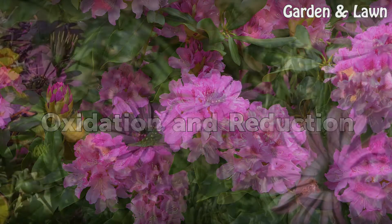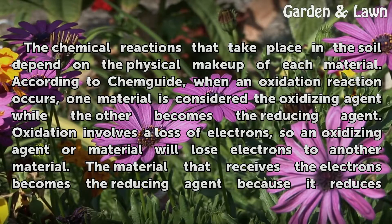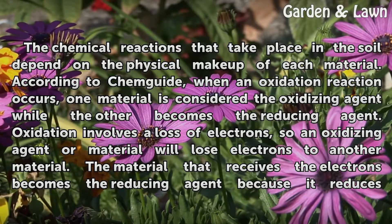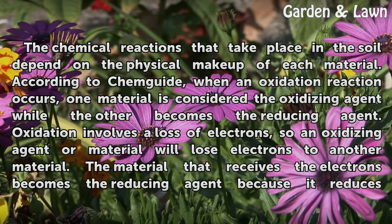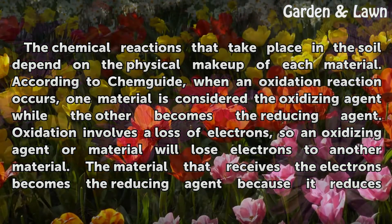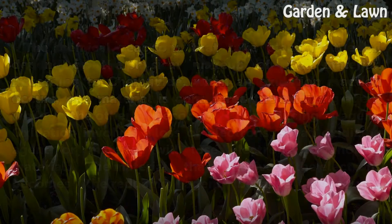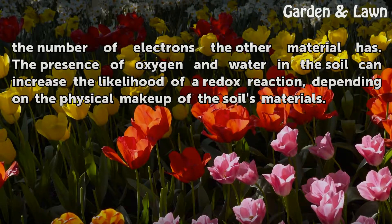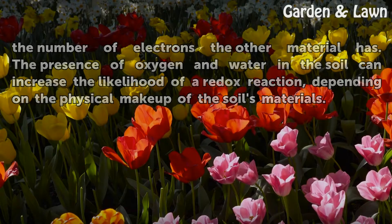Oxidation and Reduction. The chemical reactions that take place in the soil depend on the physical makeup of each material. According to Schemkeide, when an oxidation reaction occurs, one material is considered the oxidizing agent while the other becomes the reducing agent. Oxidation involves a loss of electrons, so an oxidizing agent will lose electrons to another material. The material that receives the electrons becomes the reducing agent because it reduces the number of electrons the other material has. The presence of oxygen and water in the soil can increase the likelihood of a redox reaction, depending on the physical makeup of the soil's materials.